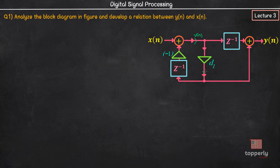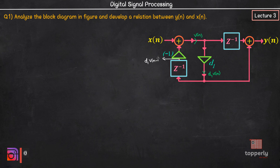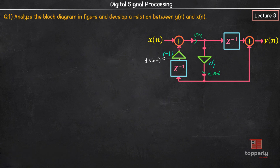Then the signal here will be d1 times v of n, as this is a multiplier with scalar d1. Next we have a unit delay operator whose input is d1 times v of n. So the output of this unit delay operator will be d1 times v of n-1, and this is fed to a scalar multiplier with scalar minus 1. So the output at this node will be minus d1 times v of n-1.